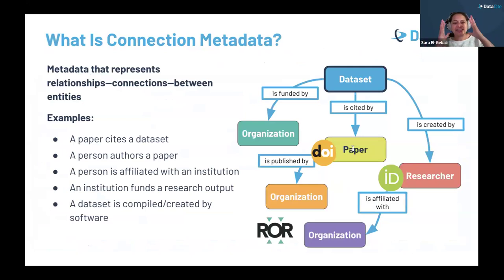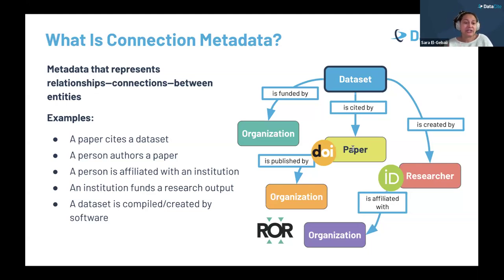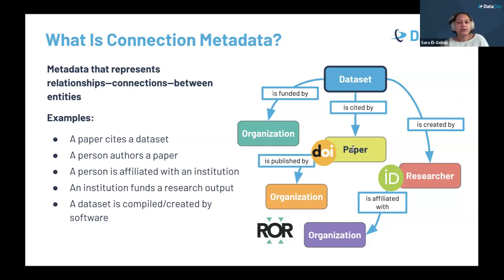Metadata is not just about describing research outputs — it also connects them. Connection metadata allows us to document relationships between entities. Imagine you're working on a project that builds on data from a previous study. That connection metadata will help you trace back the network of related outputs: what else has been produced, who are the contributors, which institutions were involved. You have all the context you need for your work.